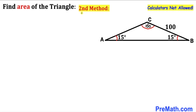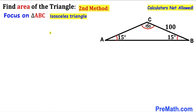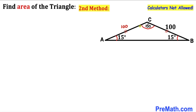Now let me show you the second method to calculate the area of triangle ABC. Focusing again on triangle ABC, this is an isosceles triangle since angle ABC equals angle BAC, so BC equals AC. If BC is 100, then AC is 100 units as well. And again, angle ACB is 150 degrees, since all three angles add up to 180 degrees.